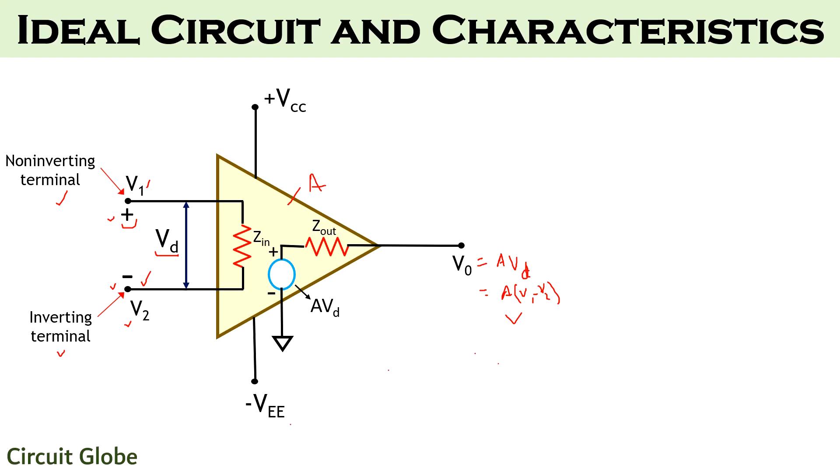Let us now proceed to understand the various characteristics possessed by the operational amplifier. The first one is open loop gain and it is represented by AV0. The open loop gain is basically the gain of the amplifier without feedback. Ideally, the value of this open loop gain must be infinite and the practical value ranges between 20,000 to 200,000.